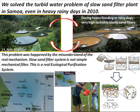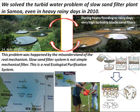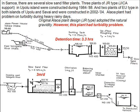We solved the turbulent water problem of slow sand filter plant in Samoa, even in heavy rainy days in 2010. This problem was caused by a misunderstanding of the real mechanism. Slow sand filter system is not a simple mechanical filter — this is a real ecological purification system. This plant had a turbidity problem.